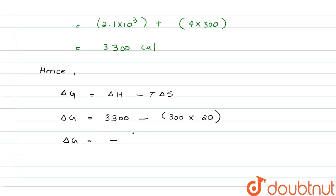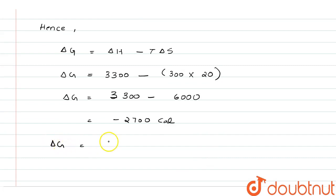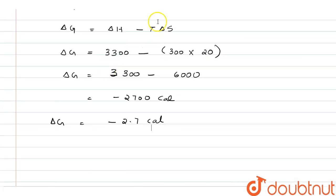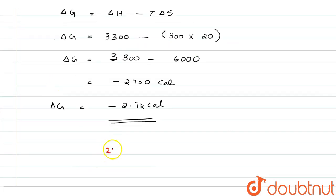3300 minus 300 into 20, which is 3300 minus 6000. When we solve this, 6000 minus 3300 gives 2700, and since 6000 has the greatest value, we put the negative sign: negative 2700 calorie. So we can write ΔG equals negative 2.7 kilocalorie. This is the correct answer — the second option is the correct one.